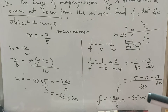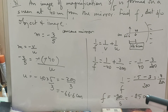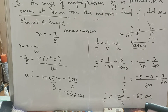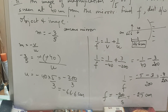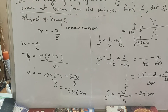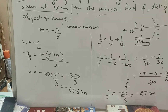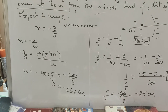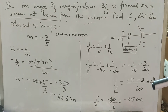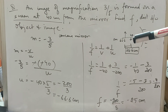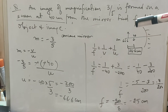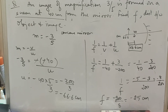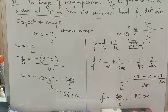Focal length comes out to be minus 25 cm. Object is placed at 66.6 cm — this is the situation where object is placed beyond center of curvature. Distance between object and image: object at 66.6, image at 40, so the gap is 26.6 centimeters.